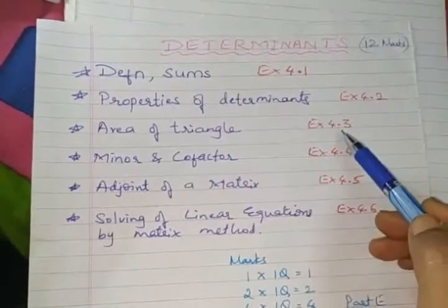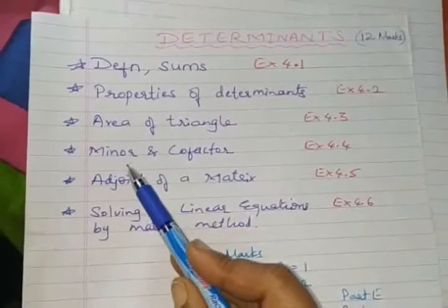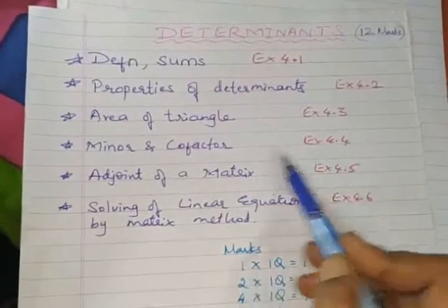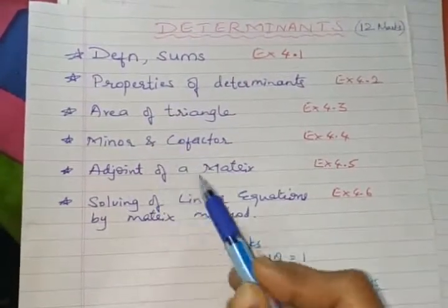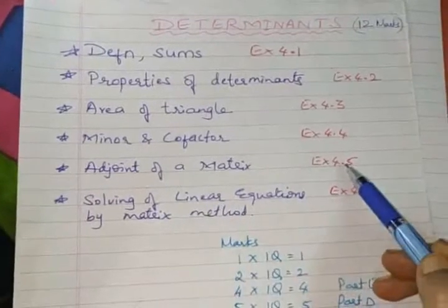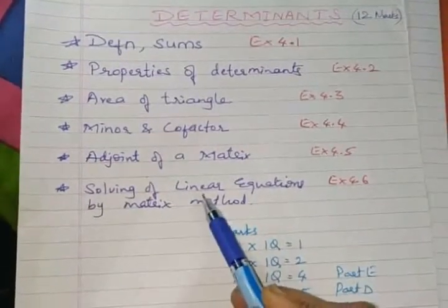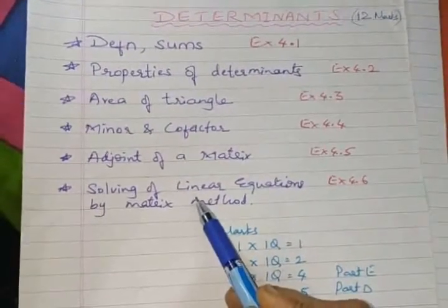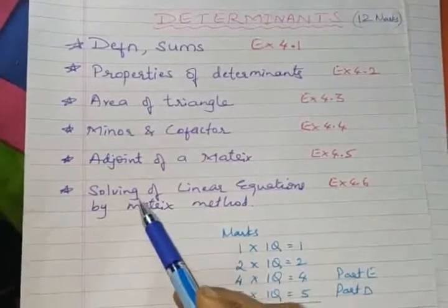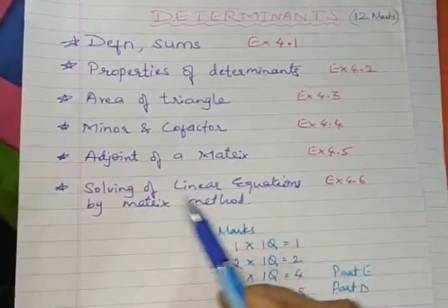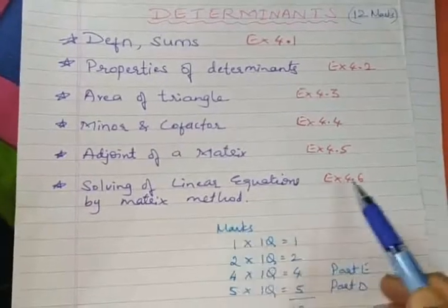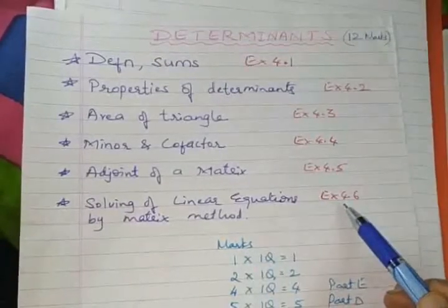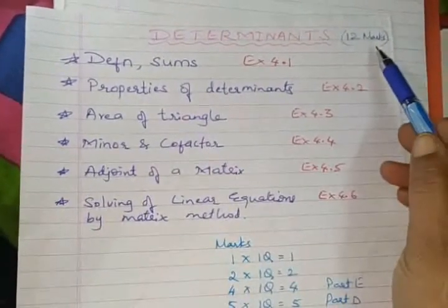Based on this we will be solving 4.3 exercise. Then followed by we will be learning the new concepts, something called minor and cofactor, 4.4 exercise. Followed by adjoint of a matrix and properties based on adjoint, it is 4.5. Then we will be learning solving of the application of determinants, where we can apply determinant concept as well as matrix also which already have come across in the previous chapter. That is solving of linear equations by matrix method. Based on this we have exercise 4.6. So total we have 6 exercises to go in this chapter and 12 marks allotted for this.